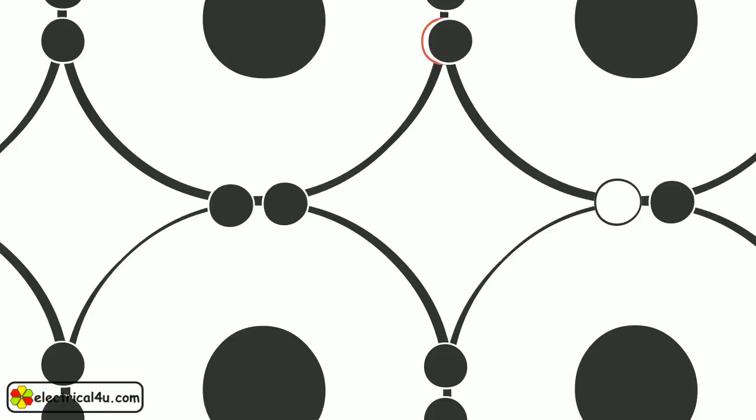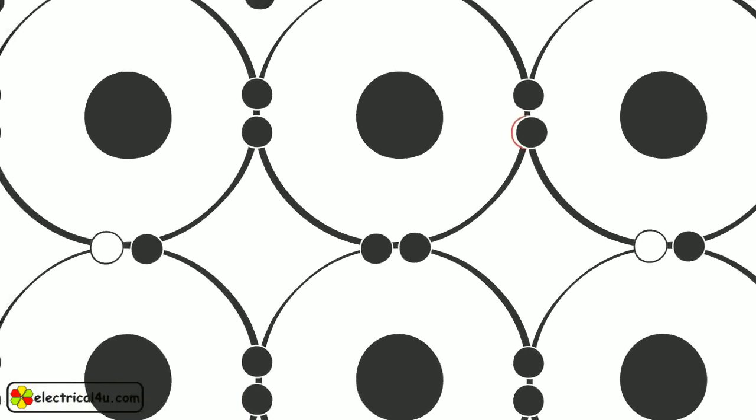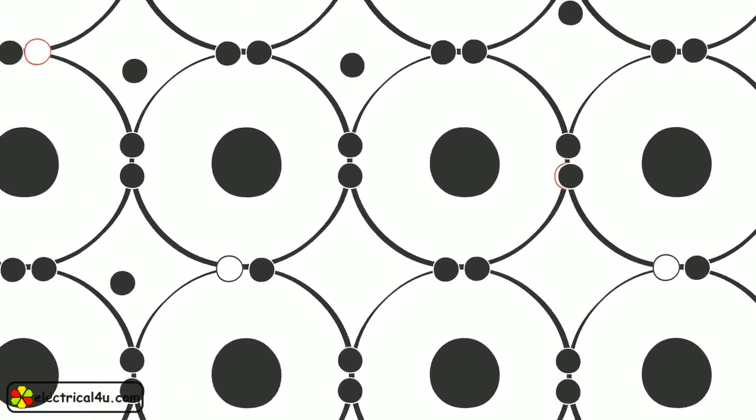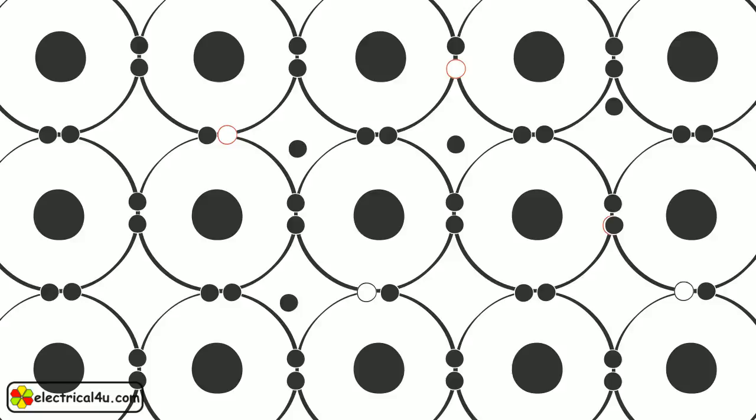Thus, pure silicon or germanium is not of much use in electronics except for the manufacturing of heat or light-sensitive resistance. Hope you got a basic idea of semiconductors. Thank you.